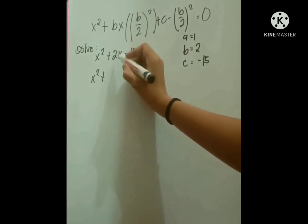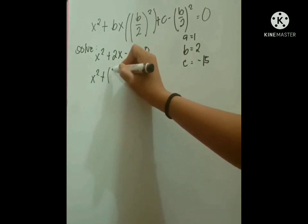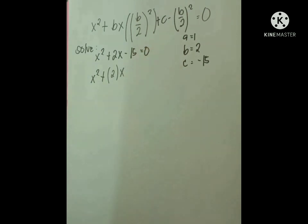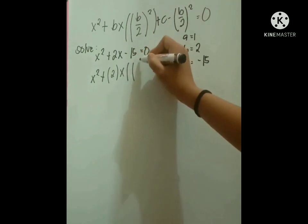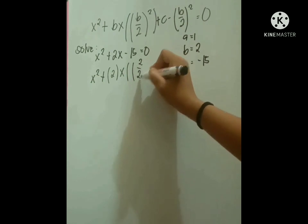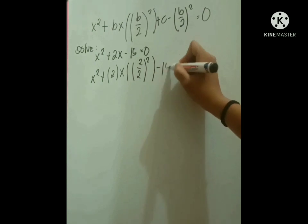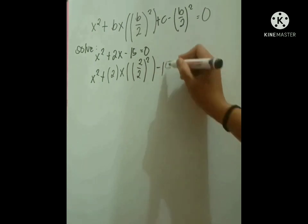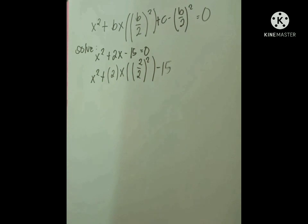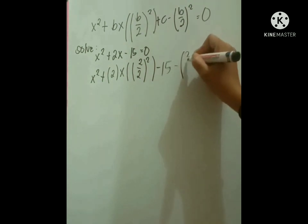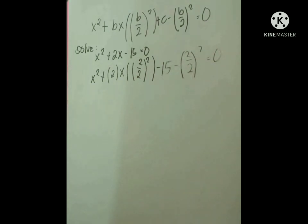And then we are going to apply the formula in this term. So we have x squared plus 2x times 2 over 2 squared. Since our c term is negative we will use the minus sign, so minus 15 minus 2 over 2 squared equals 0.